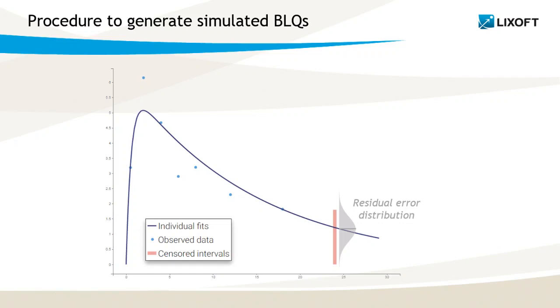If the sampled residual error is in the censored interval, then that's our simulated BLQ. And in the opposite case, if it is not in the censored interval, then the value is rejected and we try again.